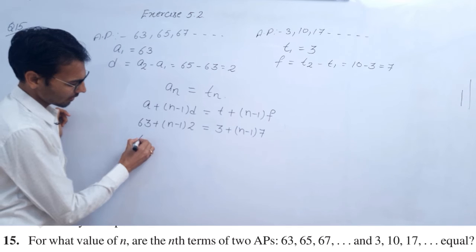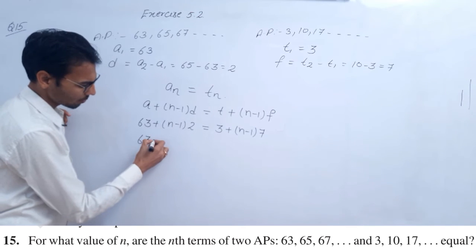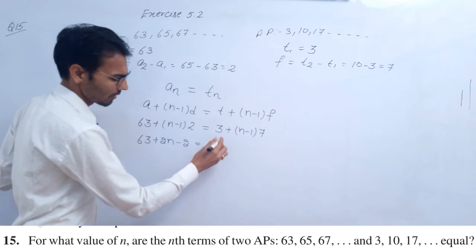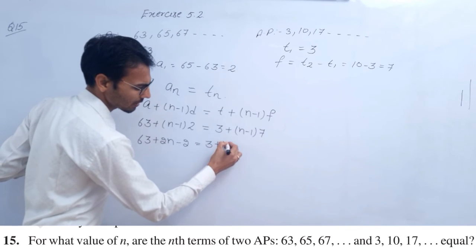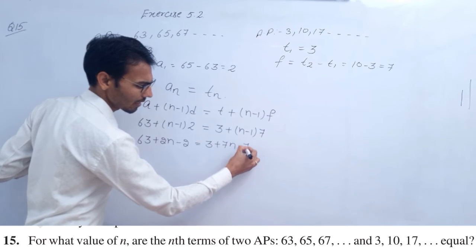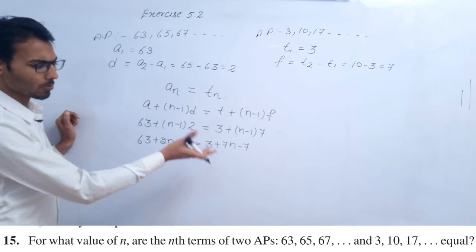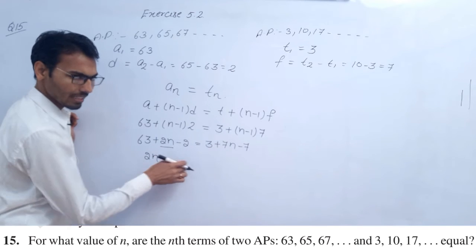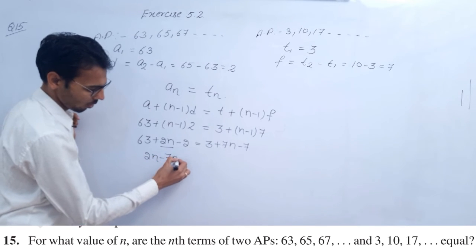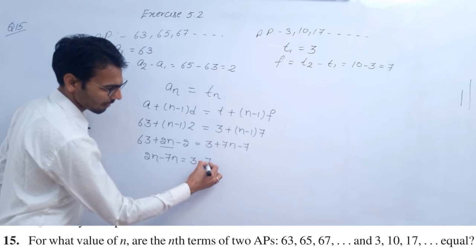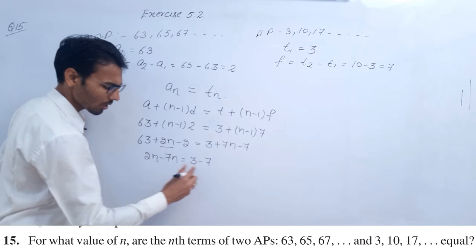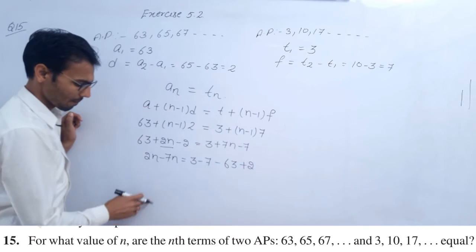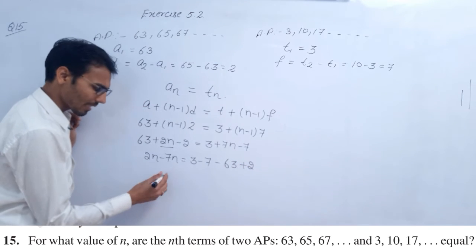Simplifying: 63 plus 2n minus 2 equals 3 plus 7n minus 7. Let me take n terms to one side and constants to the other. 2n minus 7n equals 3 minus 7 minus 63 plus 2.